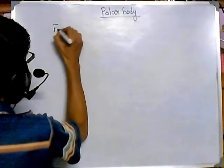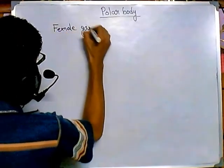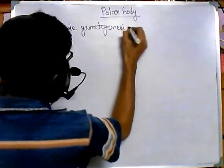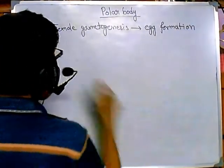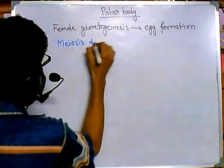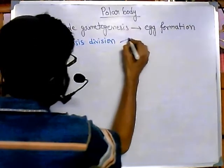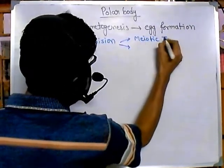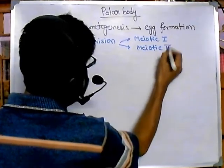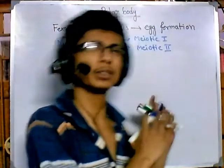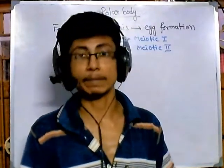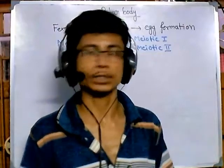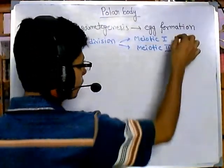So during female gametogenesis, or egg formation time, what we are having is we need to have meiosis division. And this meiosis division has two divisions: meiotic 1 and meiotic 2. If you don't know about the gametogenesis process in detail, it's fine — you can still understand the process. You can go back to my YouTube channel where you'll find a separate video on gametogenesis of male and female. But normally meiosis division is divided into two parts: meiosis 1 and meiotic 2.